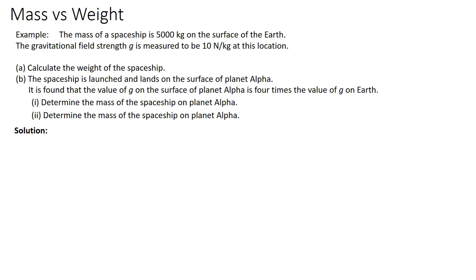Now, let's look at the solution. (a) W equals mg. So the mass is 5000 kg and g is 10. You will get 50000 newtons. For part (b)(i), the mass of an object will be the same regardless of its location. Therefore, the mass for this spaceship is still the same, which is 5000 kg.